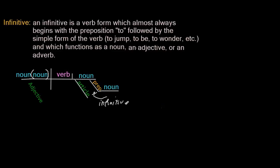Now, infinitives. The infinitive again can function either as an adjective or as a noun. If it functions as an adjective, it'll be placed under a noun. If it's functioning as an adverb, it'll be placed under an adverb, and it looks very much like a prepositional phrase. Let's take the sentence: My uncle Jeb has a license to hunt. You'll notice that there is a word that looks like a verb, which is preceded by the word to, and that is going to be our infinitive: to hunt.